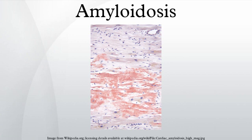Additionally, based on the tissues in which it is deposited, amyloidosis is divided into mesenchymal organs derived from mesoderm, or parenchymal organs derived from ectoderm or endoderm.